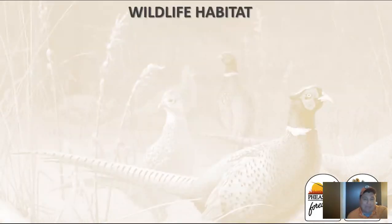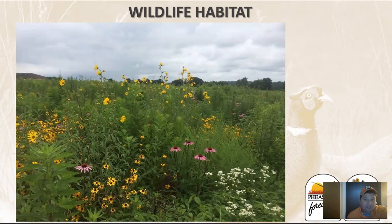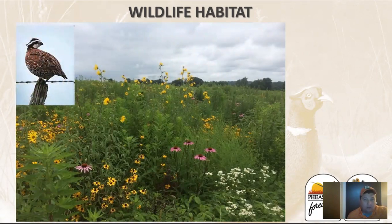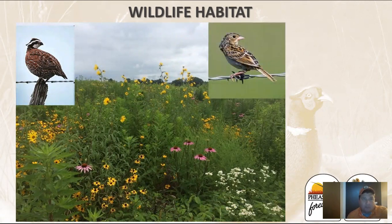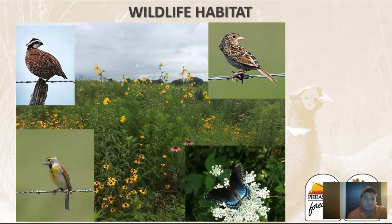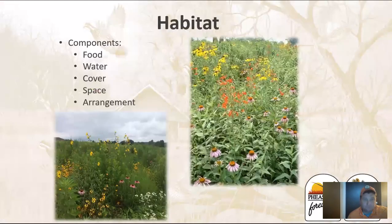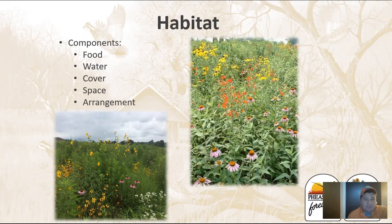Now let's define what habitat is. That's going to depend on the species we're utilizing. Whether we're talking about a bobwhite quail, migratory songbirds, pollinators that are so important to us, or other game birds. Understanding that habitat has components and we need to make sure that the habitat has all the requirements of the species we're looking at: food, water, cover, space, and arrangement.